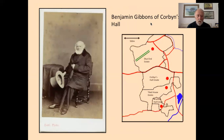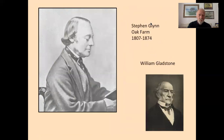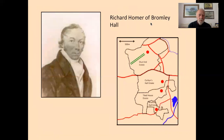Corbyns Hall was owned by the Gibbons family — ironmasters and coal masters who owned large swathes of land across King Swinford parish, particularly in the Brierley Hill area. At Oak Farm in the north of the parish we have the Glynn family. Oak Farm was ultimately owned by Stephen Glynn, a baronet and noted antiquarian whose principal home was a castle in North Wales. The Oak Farm ironworks suffered a major financial crash that took William Gladstone — a later prime minister and brother-in-law of Stephen Glynn — considerable time to sort out.